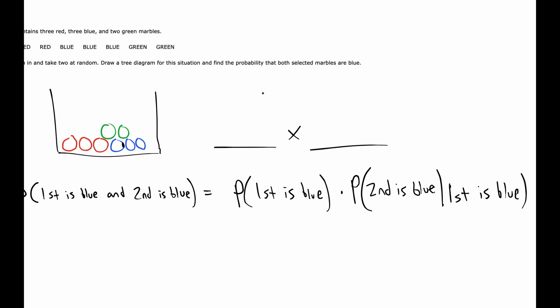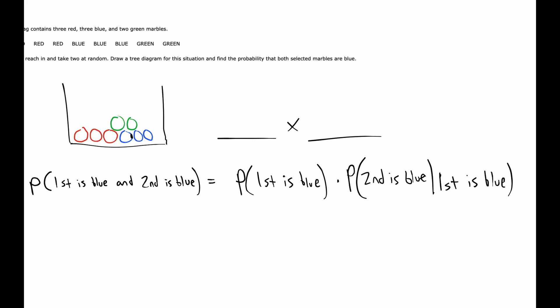That is the 'and' formula. It's often generalized to probability of A and B equals probability of A times the probability of B given A. That is the formula I'm using.